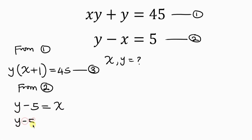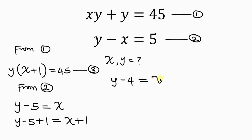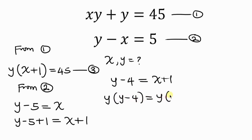So I have y minus 5 plus 1 equal to x plus 1. This simplifies into y minus 4 equal to x plus 1. Now it is looking like equation 3, but the only difference is that x plus 1 is being multiplied by y. So in order to achieve that, I'll multiply both sides by y. We've got y times (x plus 1), as it is in equation 3.